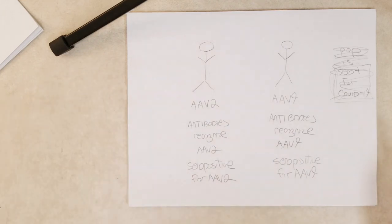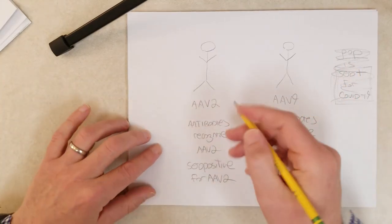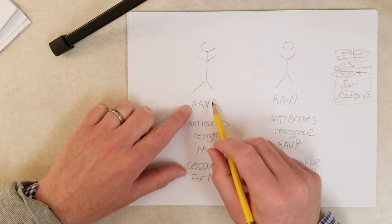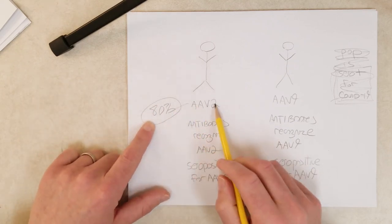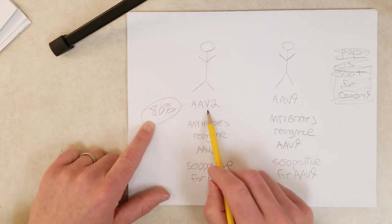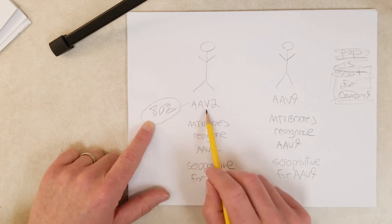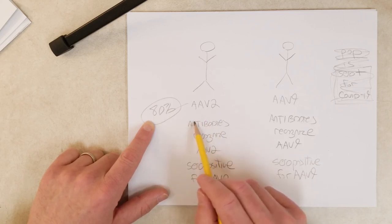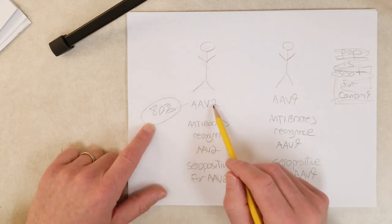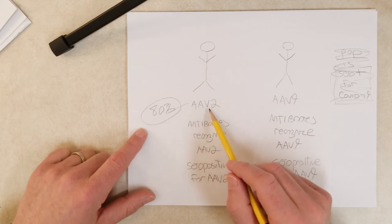So back to the AAV story. So AAV viruses, even though they're widespread in our population, 80% of humans are seropositive for AAV2. We've never seen a disease or illness resulting from AAV2 infection. So most of us have this virus, but we're not sick. Or we've had the virus in the past and we've had no symptoms. So this is really interesting to me, the fact that organisms can have viruses and be symptomless. That's pretty neat.